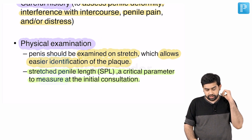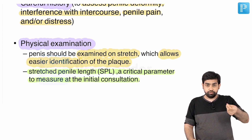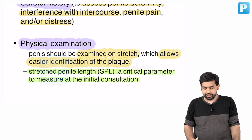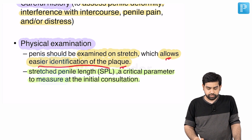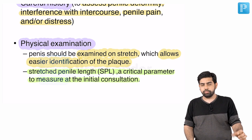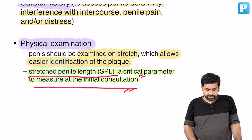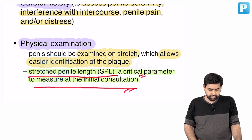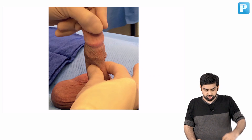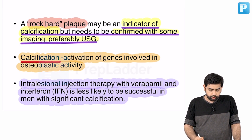Then comes the physical examination. The penis is examined on stretch — you go ahead with a flaccid penile stretch, measure the length, which allows easier identification of the plaque. When you pull this flaccid penis, palpation of the plaque becomes easier. Stretched penile length is a critical parameter to measure at the initial consultation. The person palpates the plaque by stretching the penis, then assesses the curvature and angles.